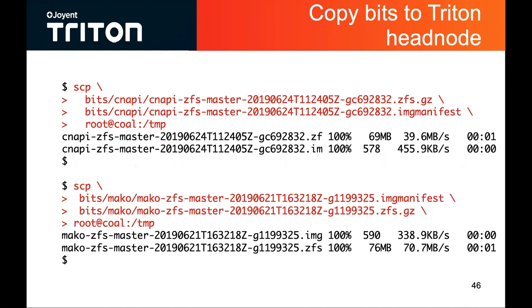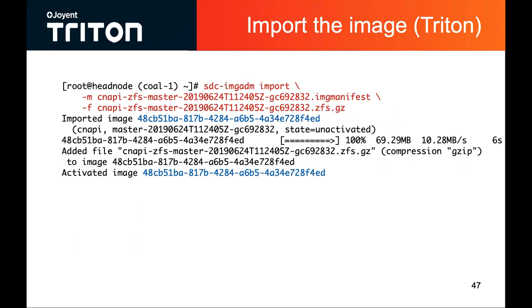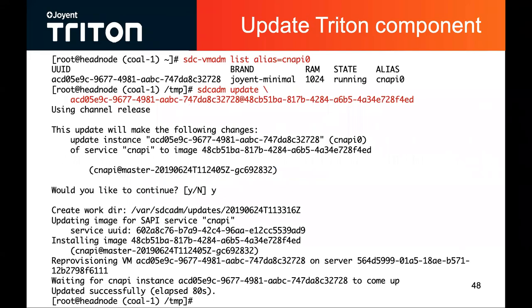Let's go with the Triton one first. image-adm — image API is effectively the image storage service and that's on all Triton instances. All the deployment tools will expect to pull down images from this data store, so we've first got to import the image into the image-adm instance — and that's the command to do that. Now going about deploying it, I'm looking to find the UUID of the running Cnapi VM. I just run the sdc-adm update command and give it the UUID of the VM that we want to update and the UUID of the image we want to update to. It goes ahead and does that, and at this point we've deployed our changes.